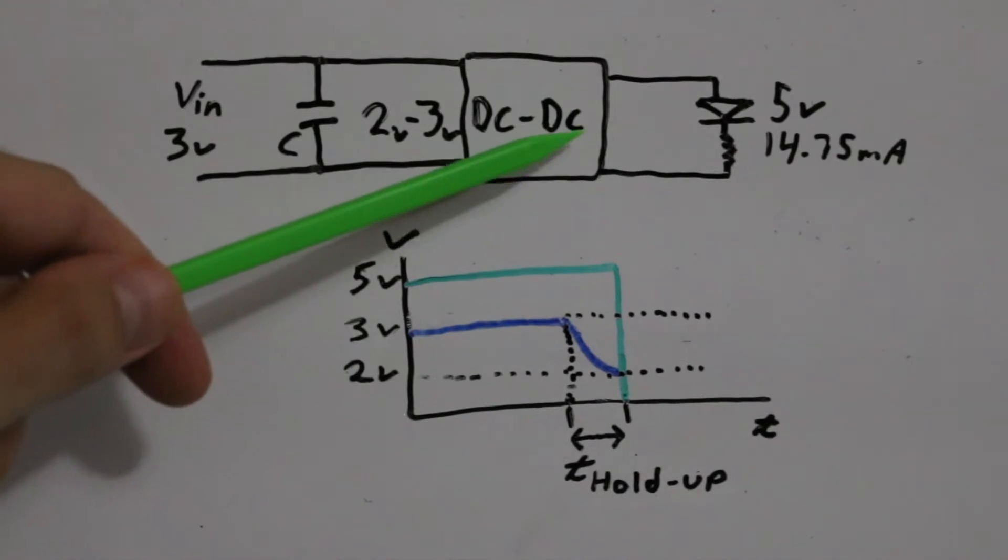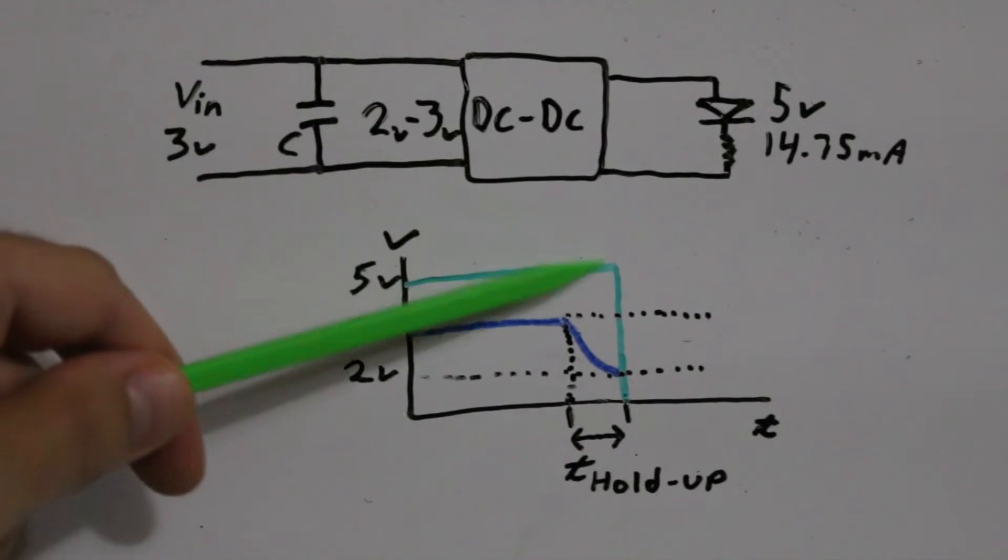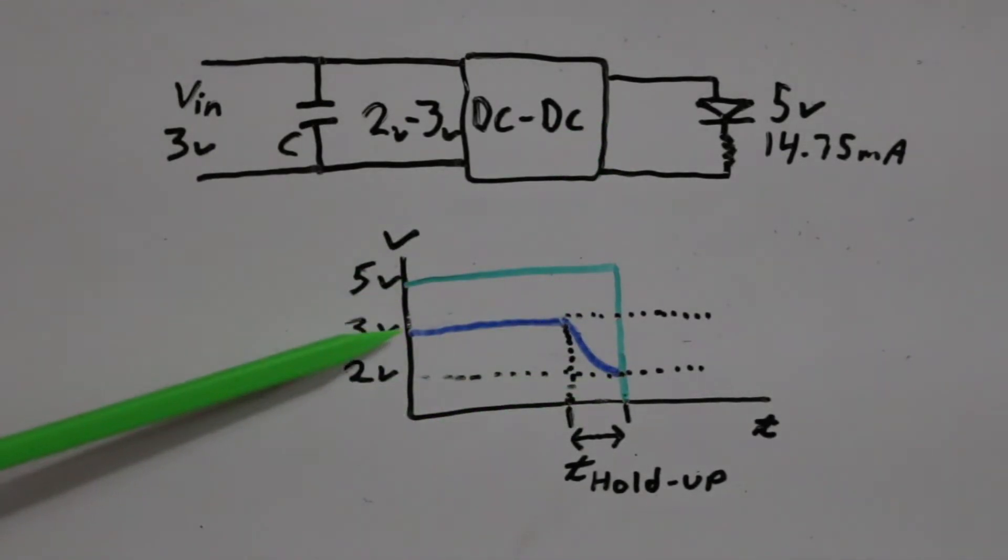So the DC to DC converter will give 5 volts out until there's not enough voltage here to power the regulator and we lose our output. Normally we have 3 volts in.